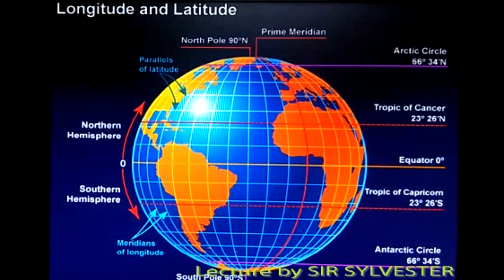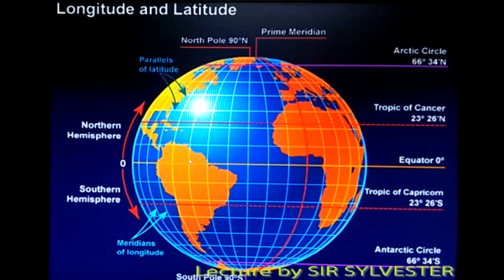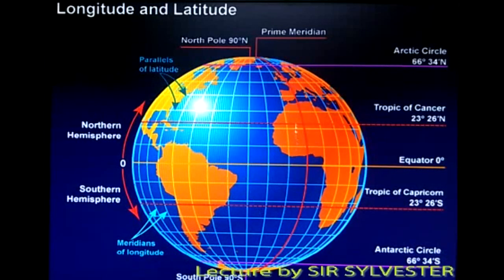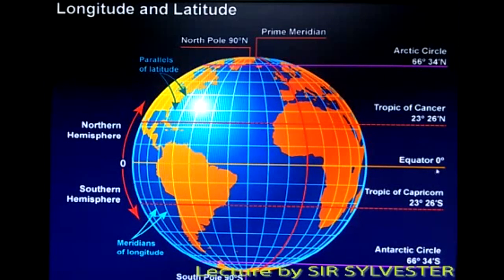We have imaginary lines on our planet Earth called longitudes and latitudes. They help us get the exact location of a particular place on the map. The lines passing from the North Pole to the South Pole are called meridians of longitude. The most important longitude is called the prime meridian. Latitudes are lines passing from West to East.